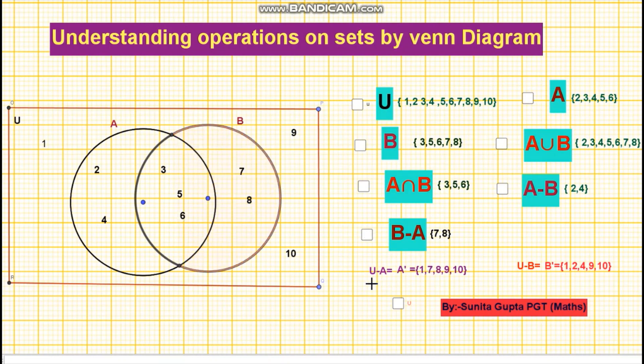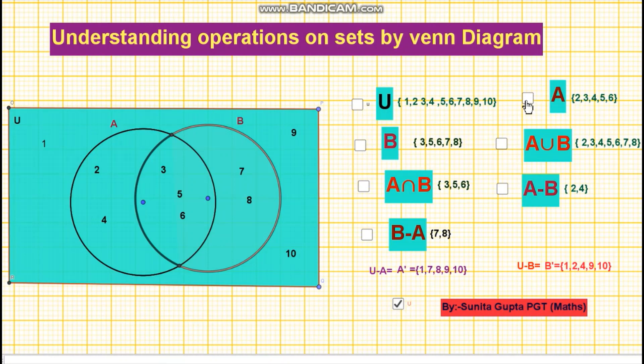Fourth operation is complement of set A. It is represented by U minus A or A dash. The complement of set A is all elements of set U which are not the elements of set A. So, the shaded region for universal set U is as shown on your screen, and this is for set A. U minus A is the light blue color region. Elements are 1, 7, 8, 9, 10.